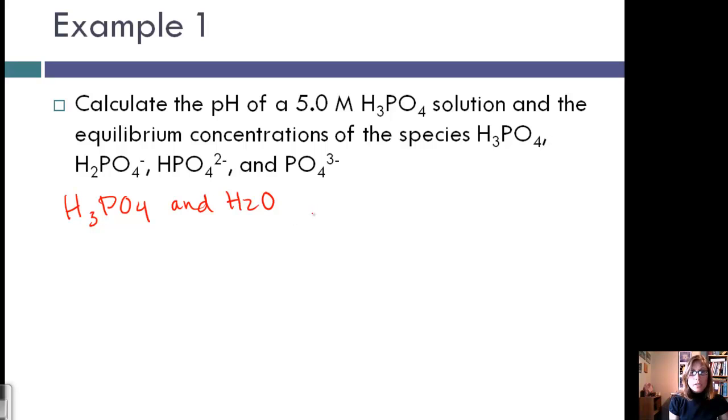From a table in the book, we know that Ka1 is our largest, and that's going to be the dominant species. Ka1 for H3PO4 is equal to 7.5 times 10 to the negative 3, whereas our Kw value is 1 times 10 to the negative 14. So this tells us that H3PO4 is going to be our dominant H+ contributor.